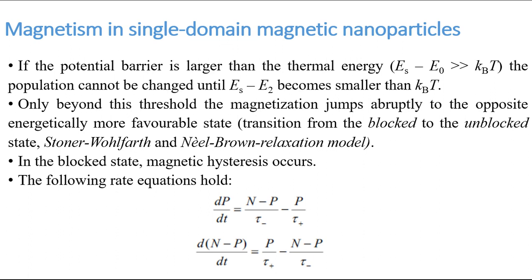However, even for a finite barrier, the superparamagnetic state can be restored if thermal energy is high enough to overcome the barrier. If the potential barrier is larger than the thermal energy, the population cannot be changed. The following rate equation is important: the change of P particles with time equals (N minus P) over tau-minus, minus P over tau-plus.